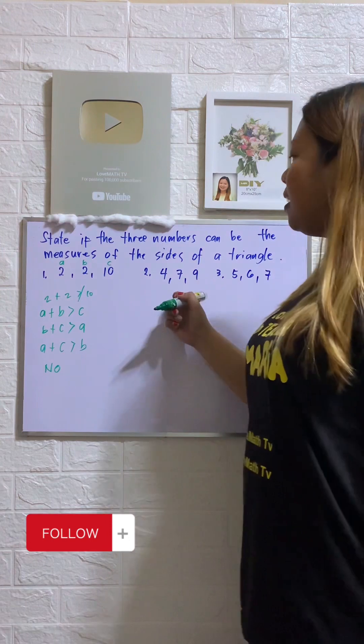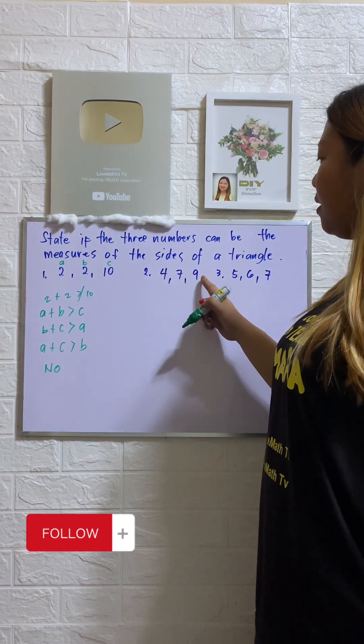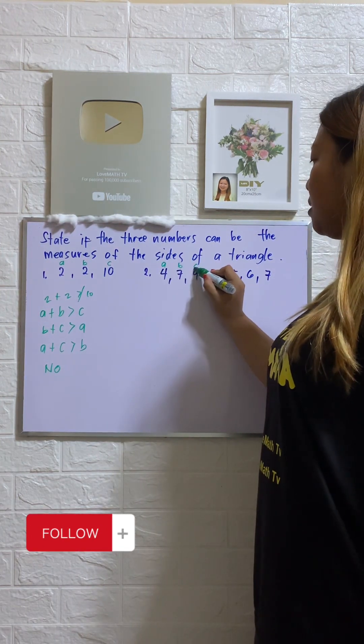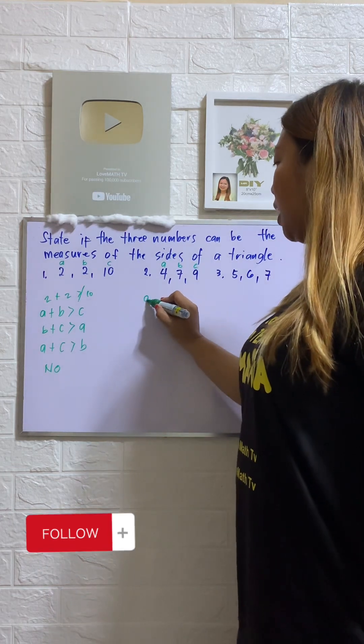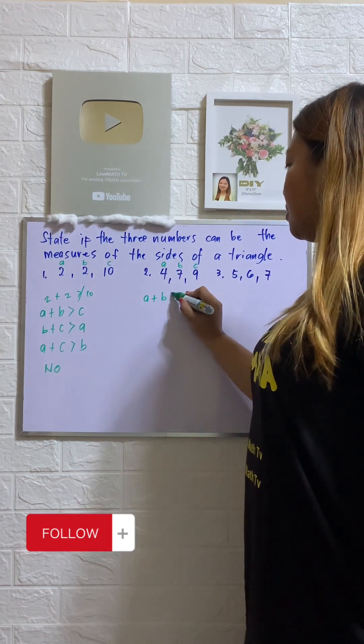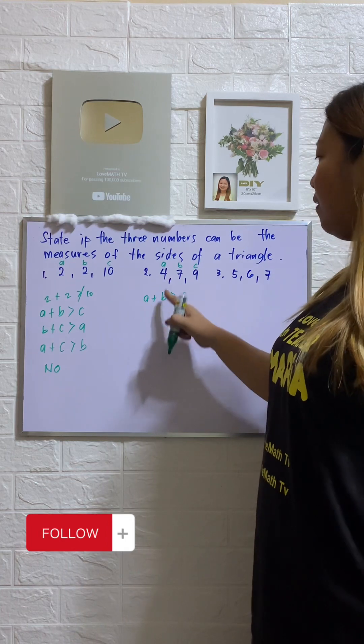How about the second example? We have 4, 7, 9. So this is A, this is B, this is C. So let's try A plus B. Is that greater than C?